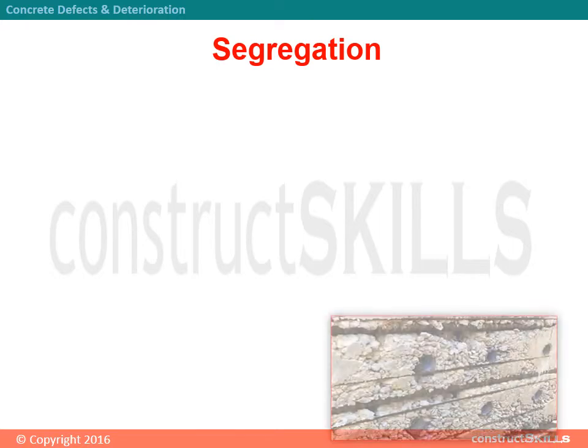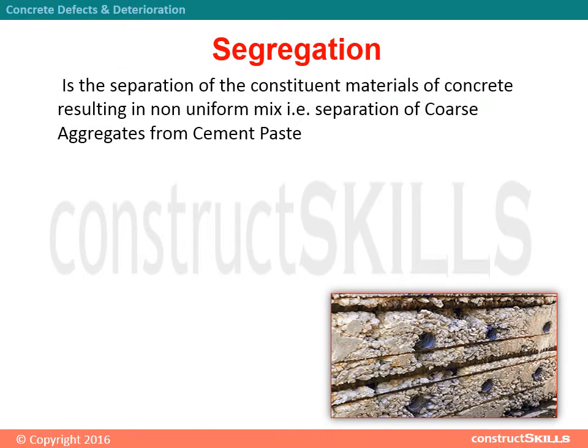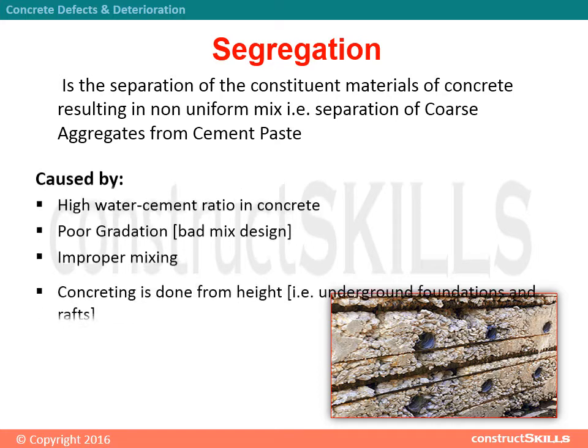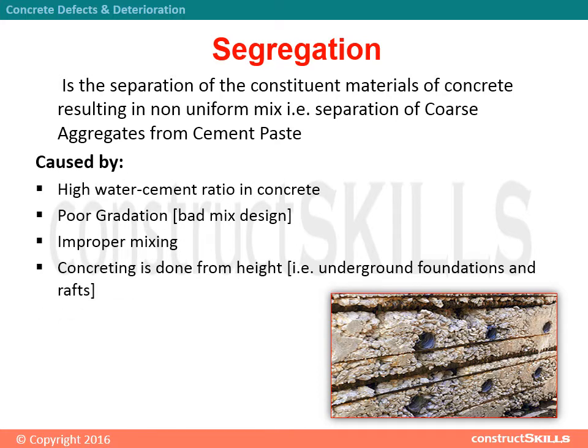Segregation is the separation of the constituent materials of concrete, resulting in a non-uniform mix — specifically, the separation of coarse aggregates from cement paste. It is caused by a high water-cement ratio, poor gradation, bad mix design, improper mixing, and concreting done from height, such as in underground foundations and rafts.